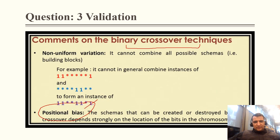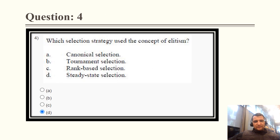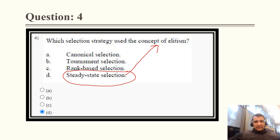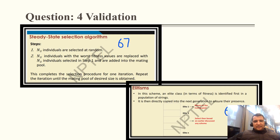Question 4: Which selection strategy uses the concept of elitism? The options are canonical, tournament, rank-based, and steady state. The correct answer is steady state — steady state selection is the strategy that uses the concept of elitism, and the correct option is D. Looking at slide number 67 and 68, elitism is used in steady state selection.